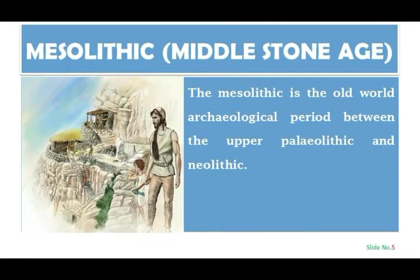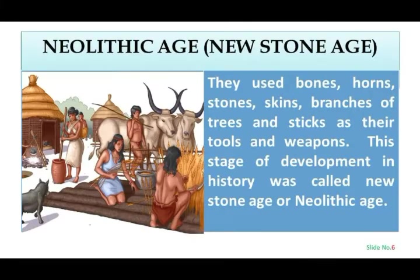The next age is the Mesolithic Age, or Middle Stone Age. The Mesolithic is the Old World archaeological period between the Upper Paleolithic and Neolithic. Next is the Neolithic Age, or New Stone Age, in which people used bones, hands, stones, skins, branches of trees, and sticks as their tools and weapons.